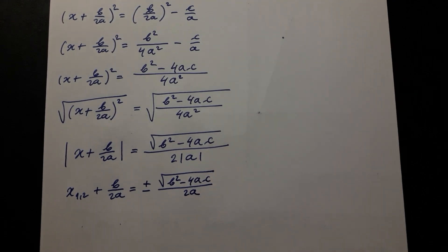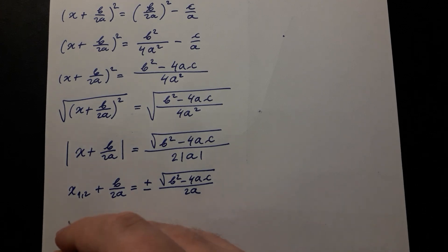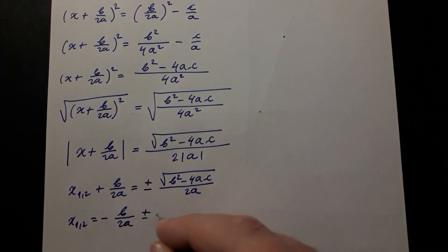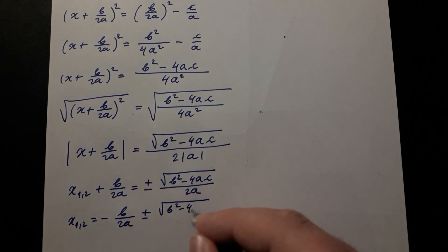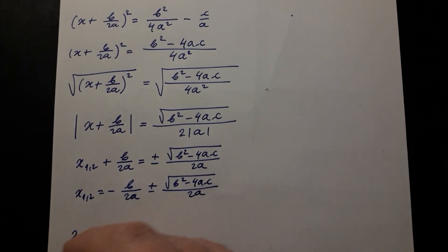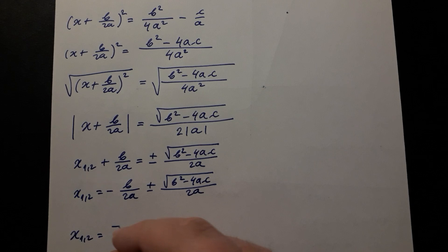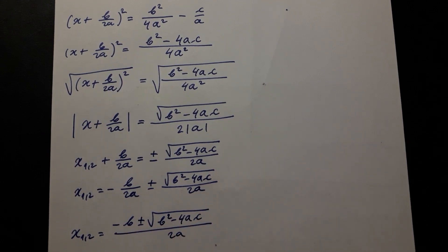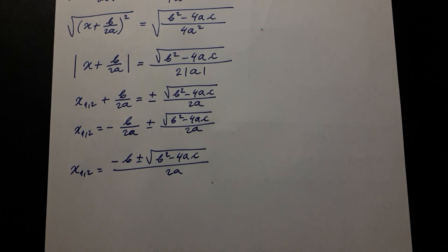Removing the absolute values gives two solutions: x₁ or x₂ plus b over 2a equals plus or minus the square root of (b squared minus 4ac) divided by 2a. Therefore x₁ or x₂ equals negative b over 2a plus or minus the square root of (b squared minus 4ac) divided by 2a, which combines to x₁ or x₂ equals negative b plus or minus the square root of (b squared minus 4ac), all divided by 2a. And we finally have the quadratic formula.